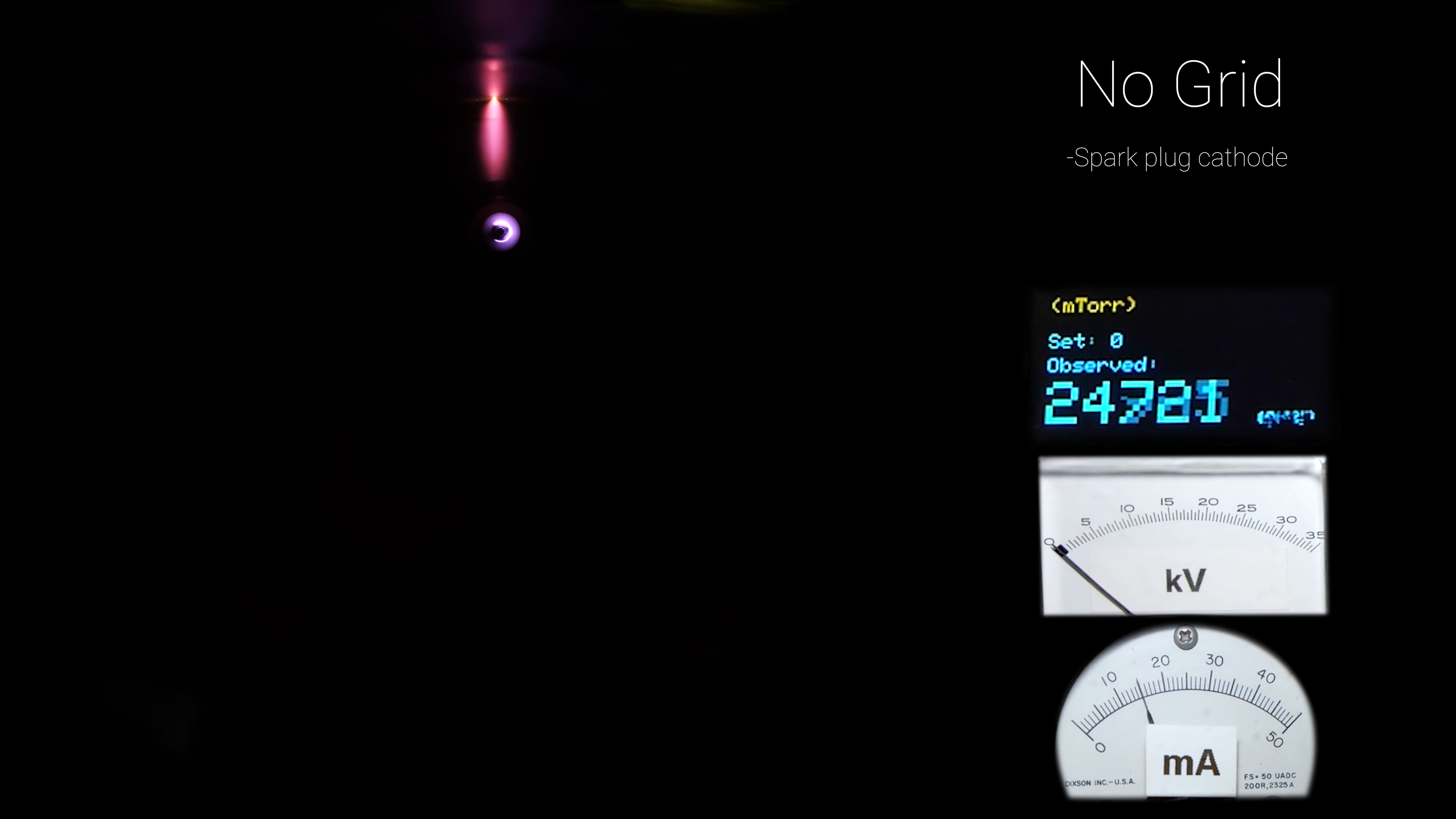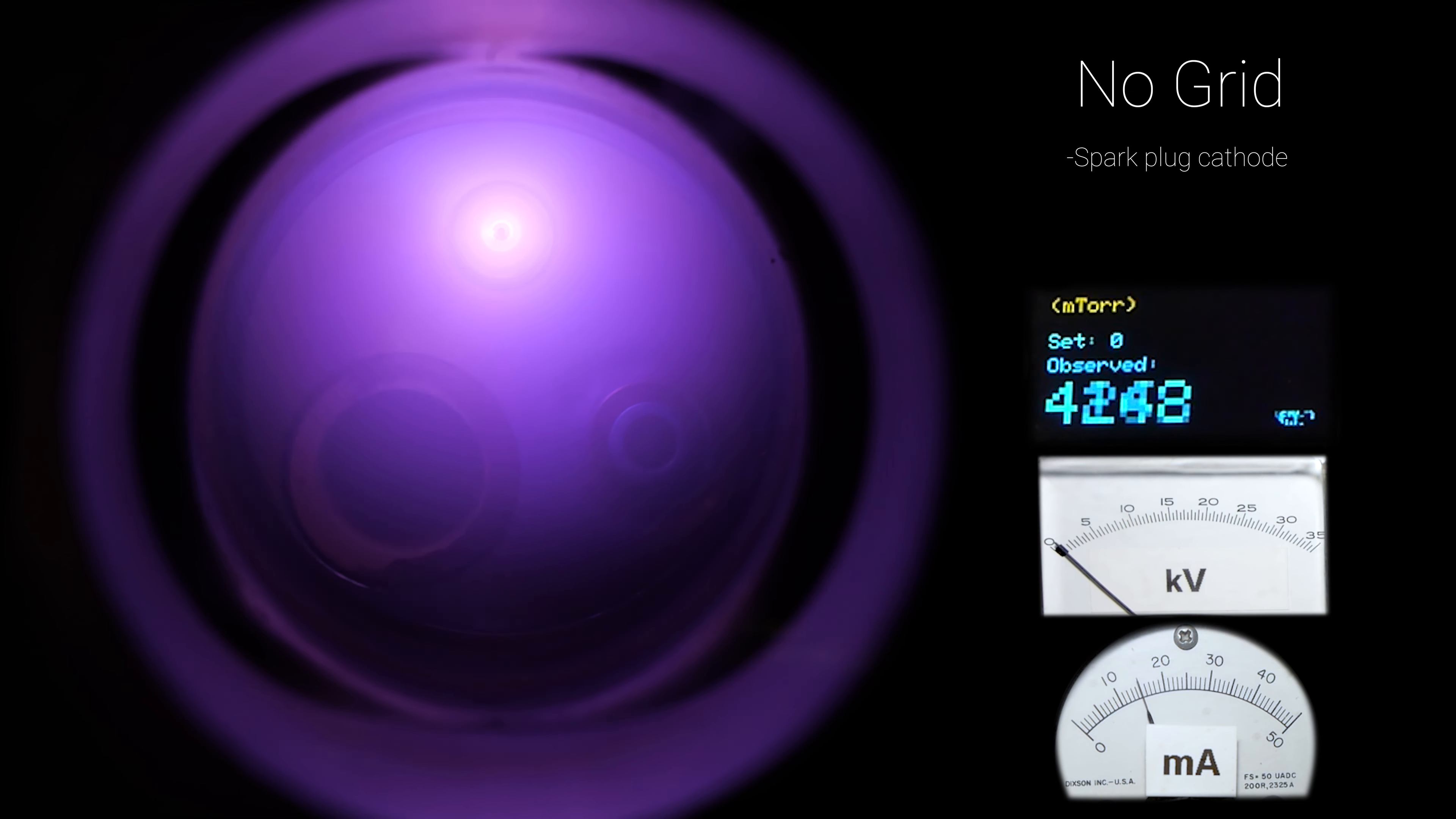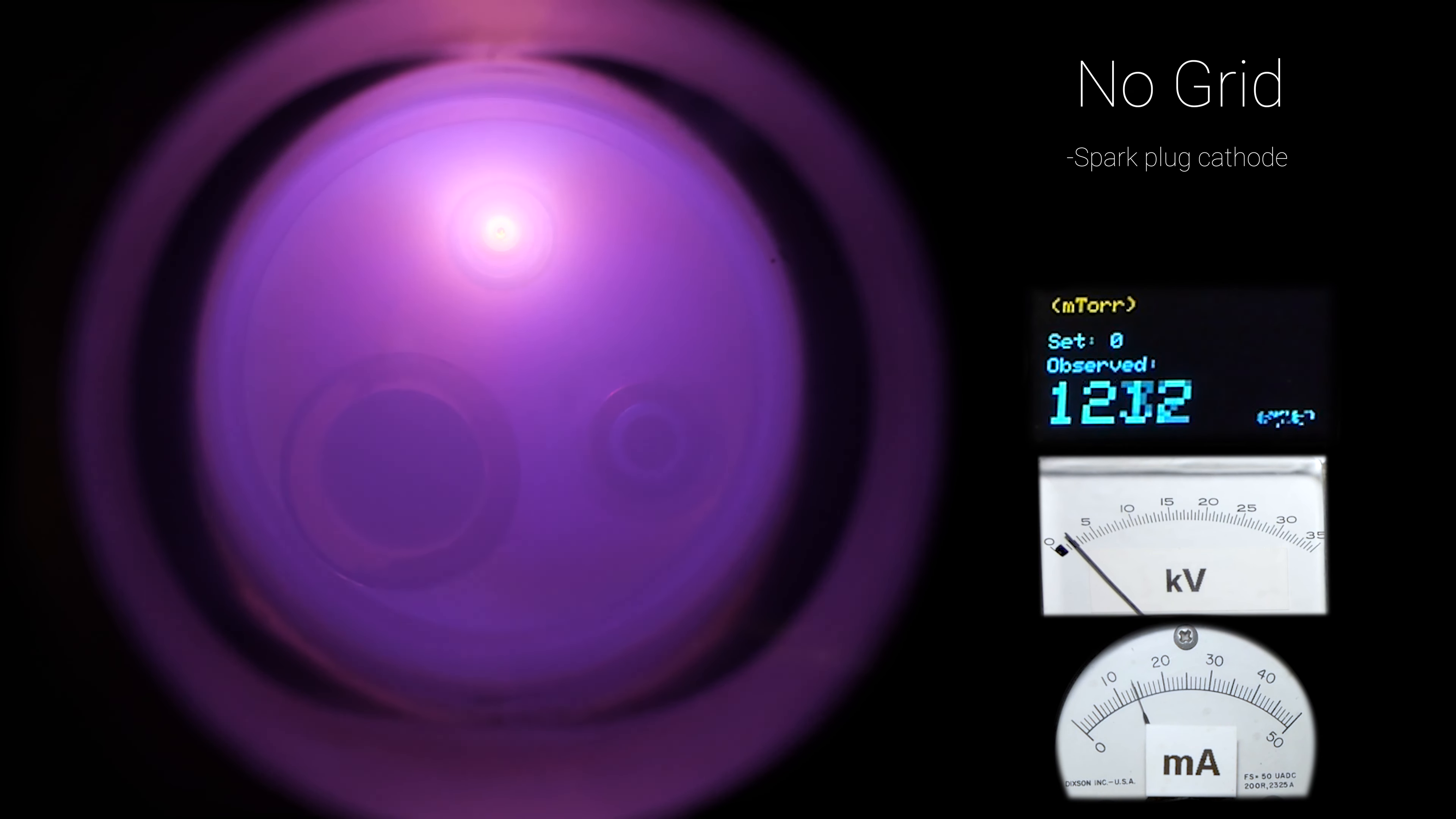I'll start each demo at a slight vacuum, and we can watch what happens as the chamber is pumped down to lower and lower pressures. Notice the plasma starts by growing outward with respect to the cathode and uniformly fills the entire chamber.